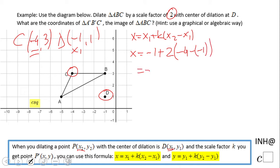Let's compute: x = -1 + 2(-4 + 1) = -1 + 2(-3) = -1 + (-6) = -7. So the x coordinate is -7. Now let's do the same for the y coordinate.